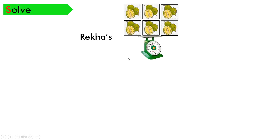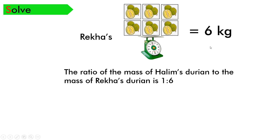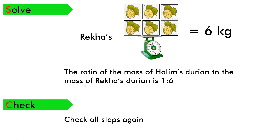Now we solve. Kita dah nampak berat durian Rekha equal to 6 kilogram. So the ratio of the mass of Halim's durian to the mass of Rekha's durian is 1 to 6. Nisbah berat durian Halim kepada berat durian Rekha adalah 1 nisbah 6. Then check — kita kena semak daripada langkah awal kita buat pengiraan tadi. Check all steps again.